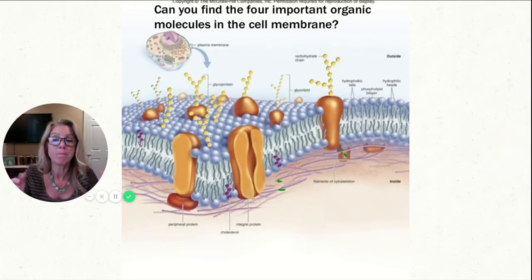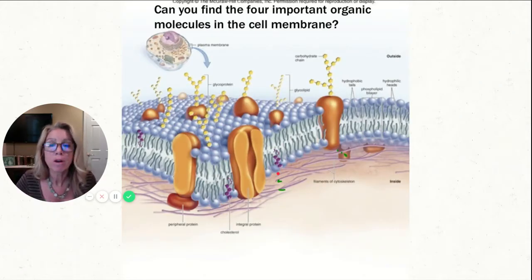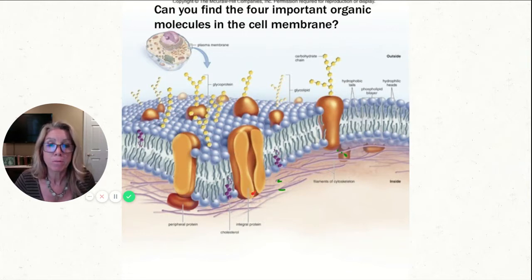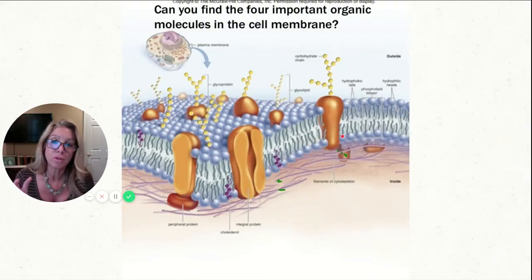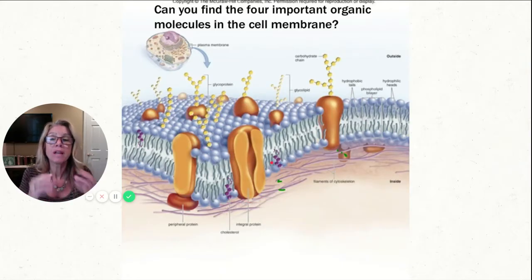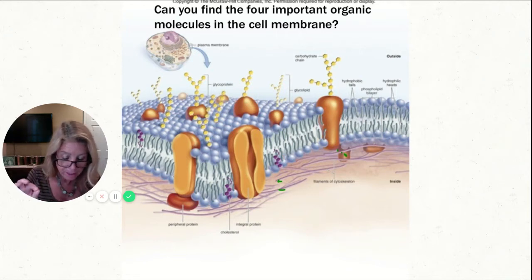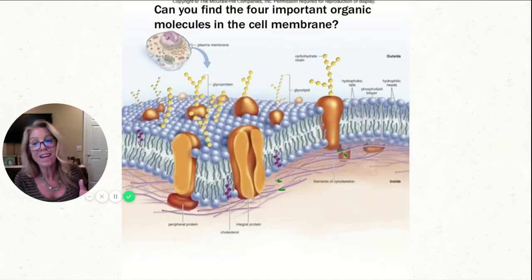Carbohydrates — check. The second important organic molecule is lipids. There are two categories: fats and steroids. Both are represented — this is a modification of a fat (a phospholipid), and cholesterol is a steroid. The third important organic molecule is proteins, built from amino acids, and we can see several different proteins within this membrane. The only one of the four not found in cell membranes is nucleic acids — DNA and RNA are not found in cell membranes.